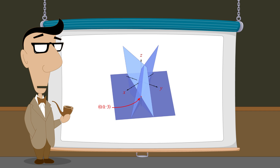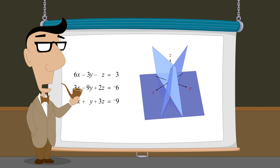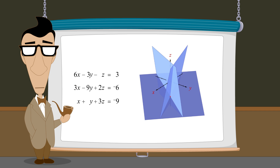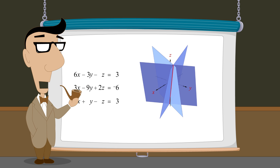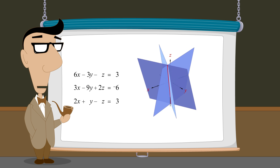These are the coordinates of the intersection of the three planes corresponding to this system of equations, and this point graphically represents the single unique solution of the system. But what will happen if the system we are solving has an infinite number of solutions? To find out, let's modify the third equation so that its plane is reoriented, causing the intersection of the three planes to form a line. The infinite number of points on this line correspond to the infinite number of solutions of this system.